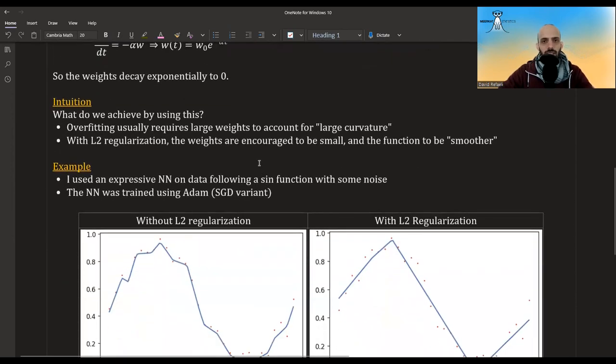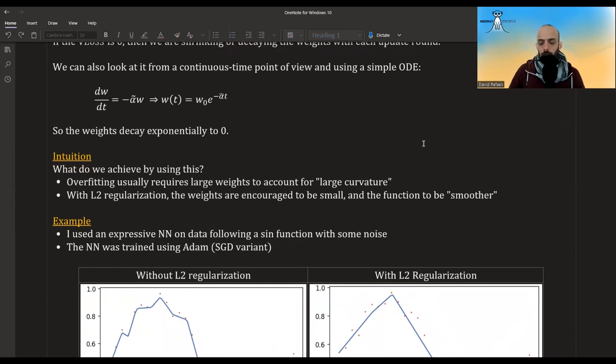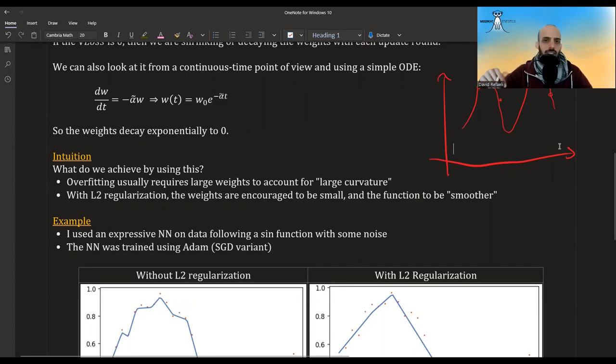What is the intuition behind this type of regularization? Usually in overfitting, in order to have this overfitting, let's say in regression that the line really goes up and down, in order to try to fit all the points, it needs to do some really big maneuvers. It has to have a lot of curvature in order to overfit. And in order for it to do this, it needs big coefficients.